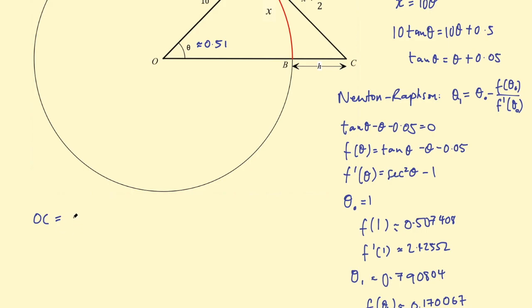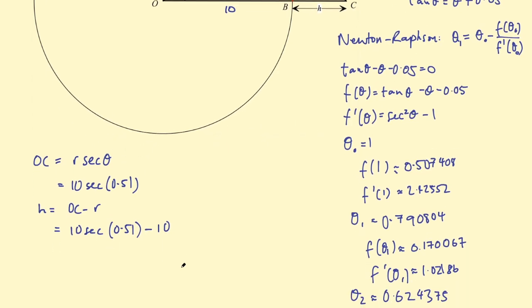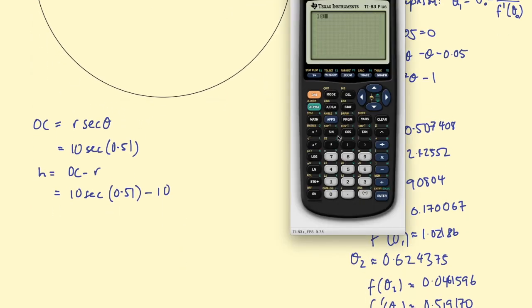This length OC is defined as the secant of this angle, and if the radius is 10 we multiply that by 10. So OC is the radius times the secant of theta, so the radius is 10 and our angle is 0.51 approximately. To find h, h is equal to OC minus the radius, which is 10. So h equals OC minus r, which is 10 sec of 0.51 minus 10. Putting that into a calculator: 10 divided by cosine of 0.51 minus 10, and I get an answer of 1.458.